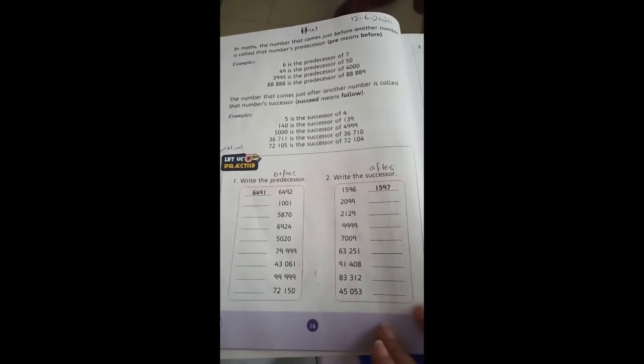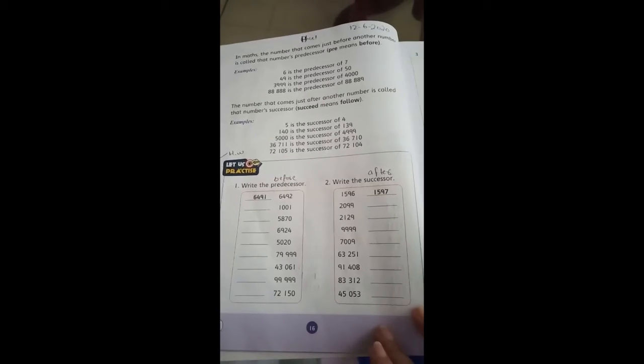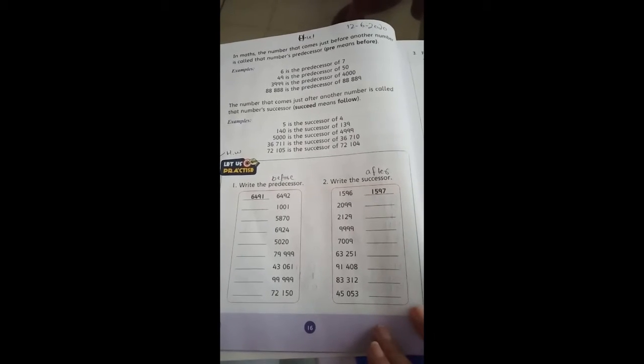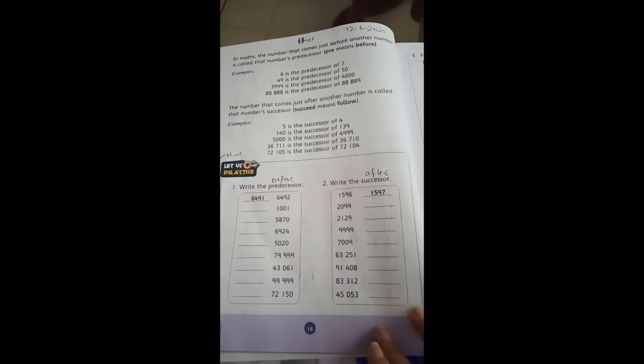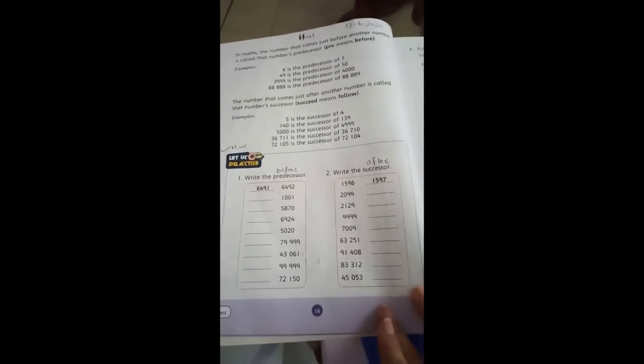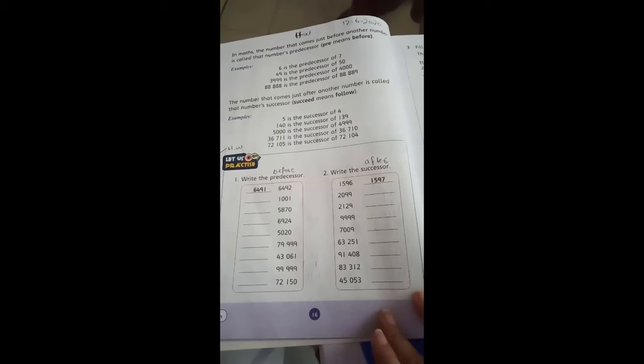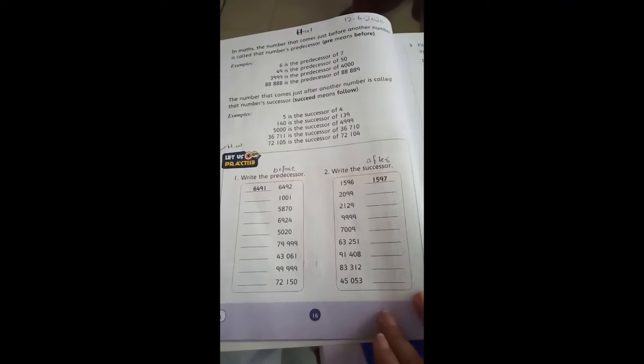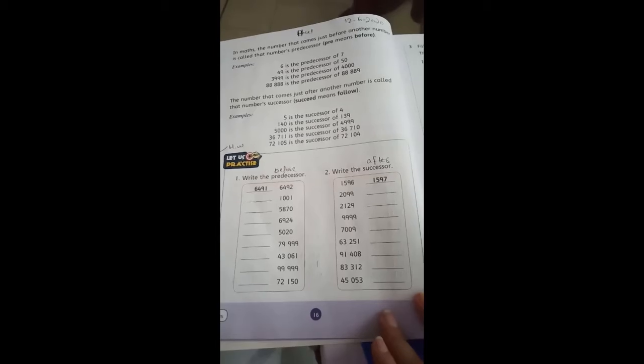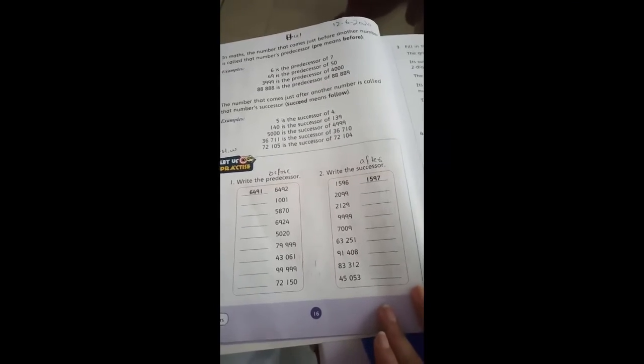The number that comes just after another number is called the number's successor. Succeed means follow. 5 is the successor of 4, 140 is the successor of 139, 5000 is the successor of 4999, 36,711 is the successor of 36,710, and 72,105 is the successor of 72,104.